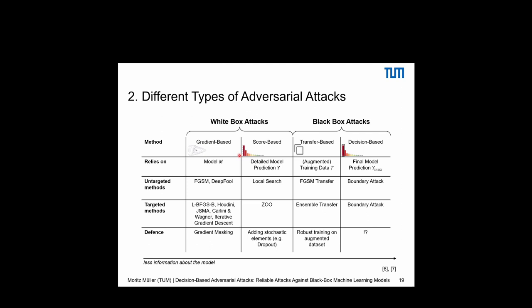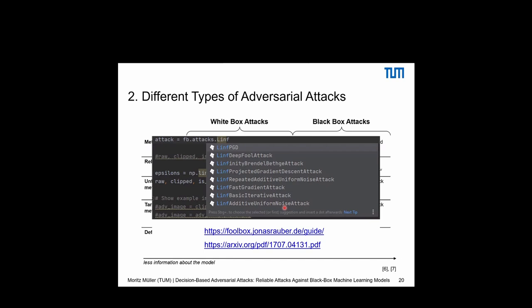We can sub-classify attacks into white box attacks — gradient-based and score-based methods, which need access to the model or at least its confidence scores to numerically estimate gradients — and black box attacks, which don't rely on model information, maybe only the training data. The decision-based approach really just needs the last decision and access to the black box model. From left to right, we need less and less model information. As a side note, there is a Python API called FoolBox by the paper's authors that lets you create and test pre-implemented attacks.